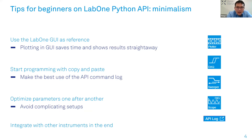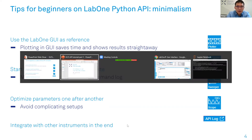Start with the Lab One graphical user interface as your reference, because Lab One GUI already has many built-in plotting functions so you don't have to write those in your own code - you can visualize almost everything in the GUI already. Then make the best use of the API command log, which I'll show in the live demo - this will make life much easier so you don't have to learn which syntax to use. After that, optimize the parameters one by one and then integrate with your other setup.